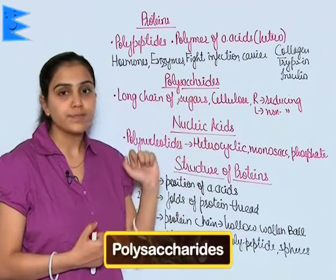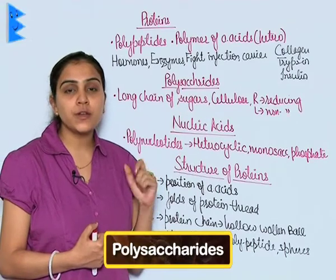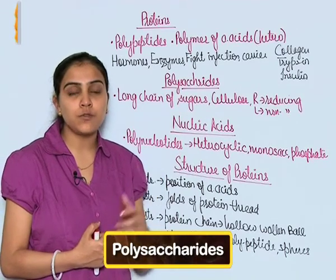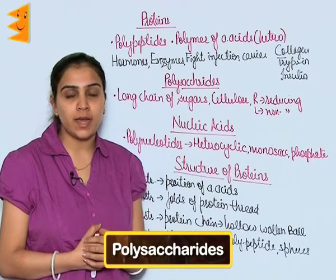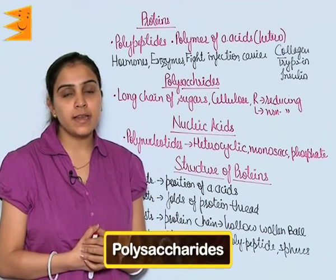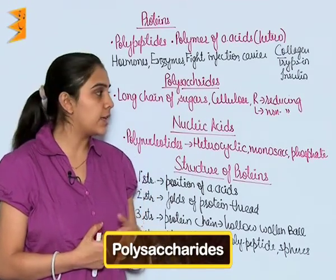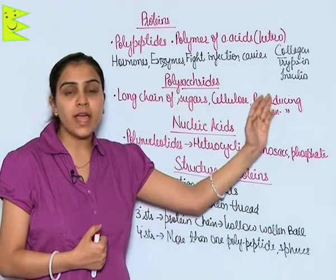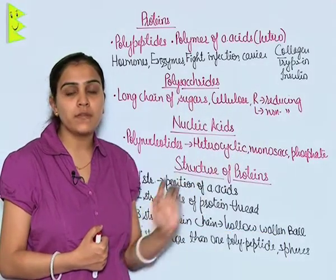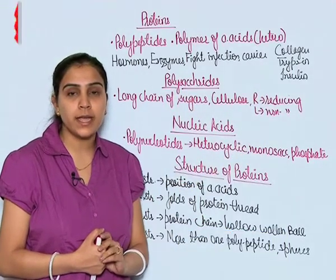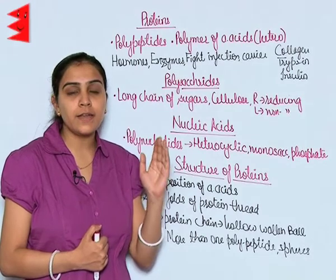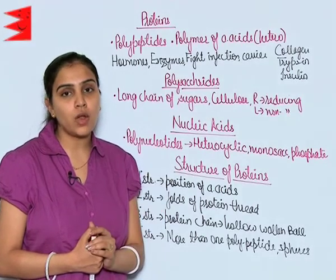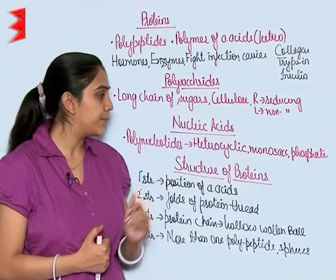Polysaccharides. Long chains of sugars form polysaccharides, like cellulose or starch. In this long chain, the right end is always the reducing end and the left end is the non-reducing end.